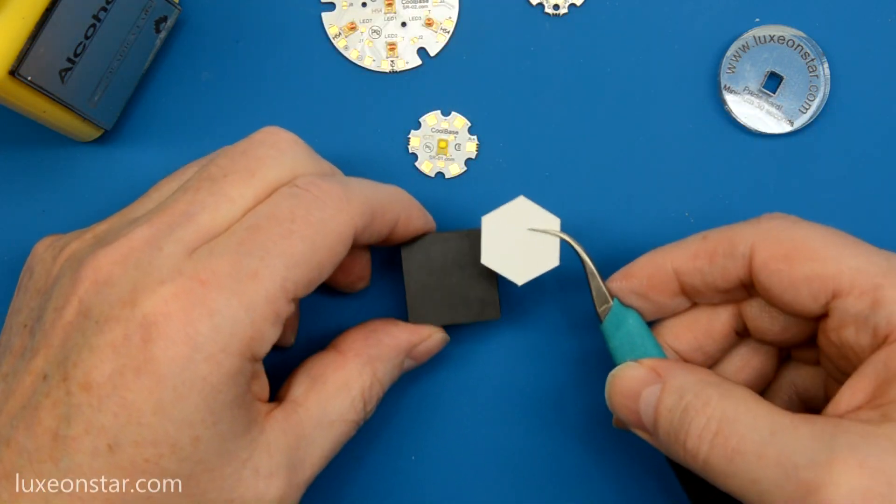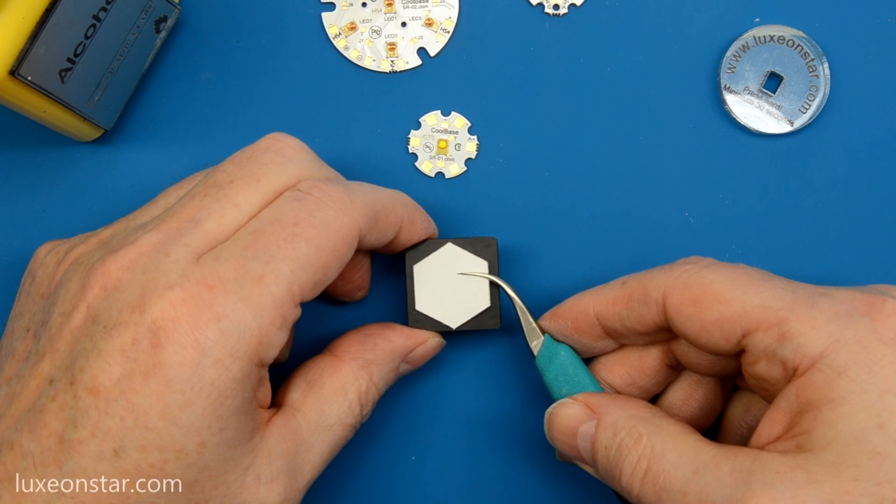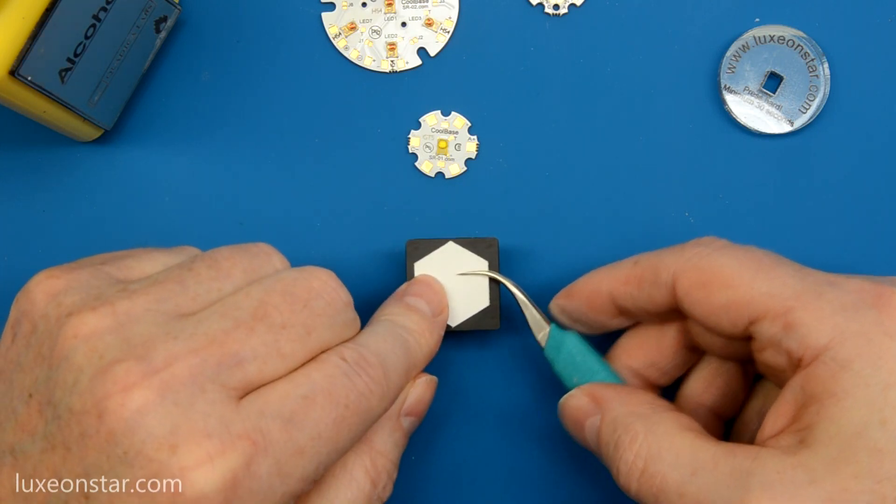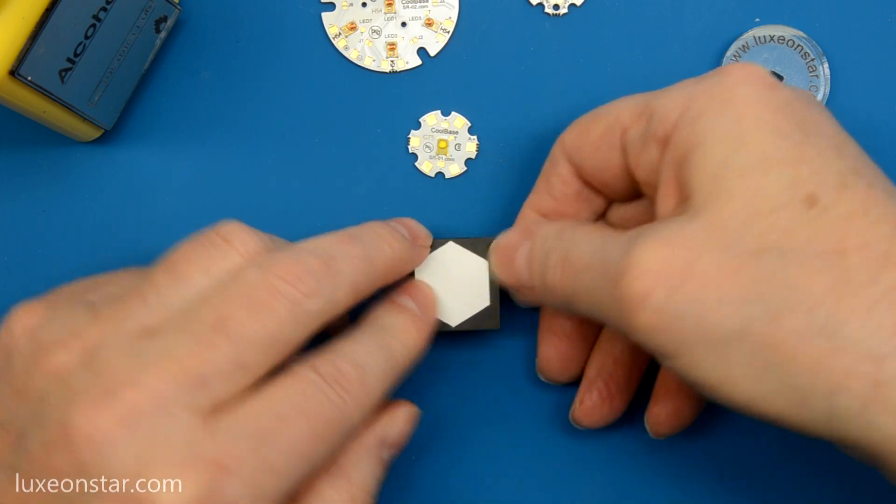Then you position the pad onto your heat sink and just press it down with your thumb.